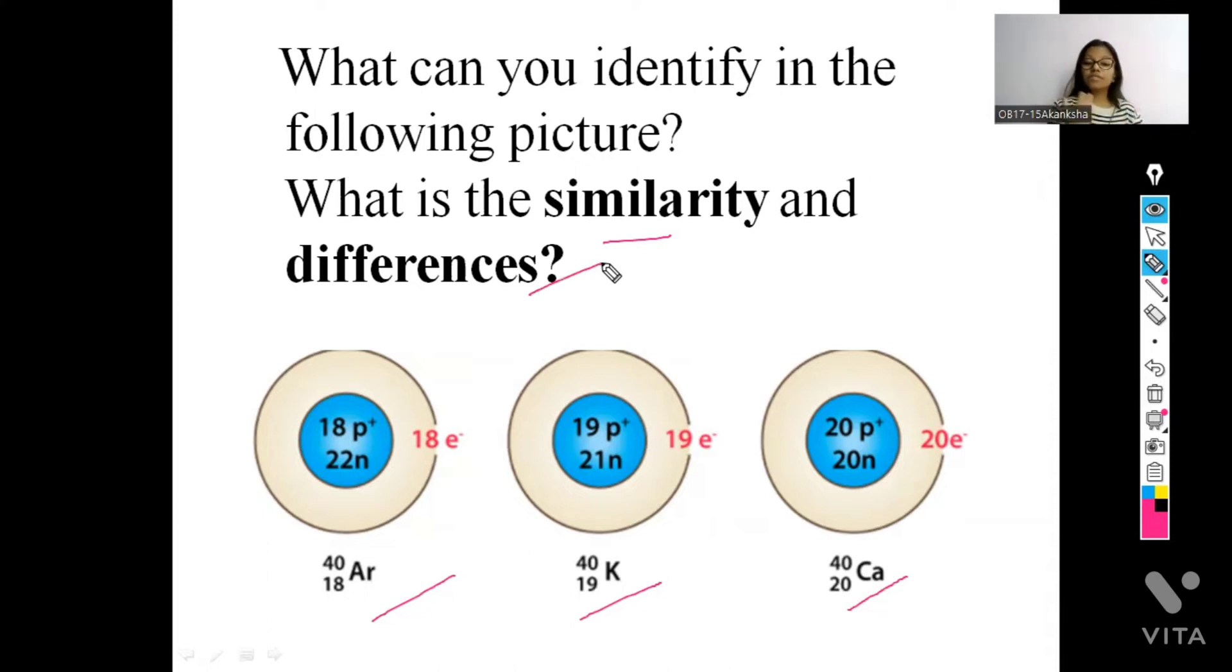So yes, first we will see the similarities. And the similarities are, I think, yeah, we can see here these where the names are written with their atomic masses and their atomic numbers. Here we can see all these elements, they have same atomic masses. Argon is having 40 atomic mass and potassium is having 40 and calcium is having 40 again.